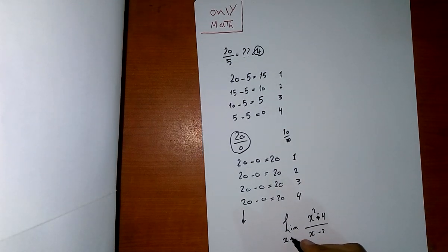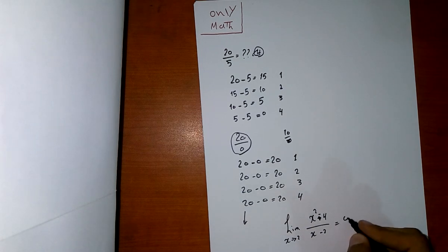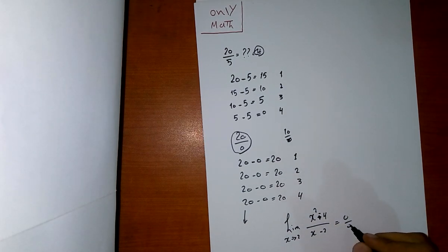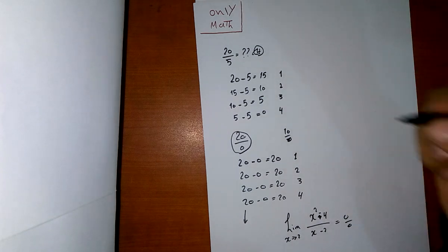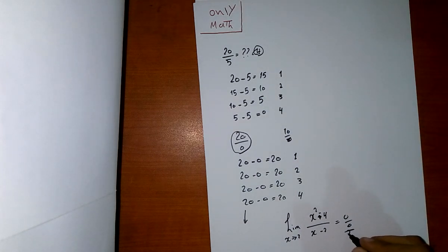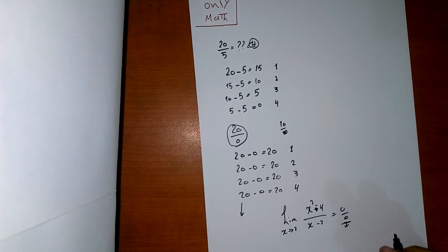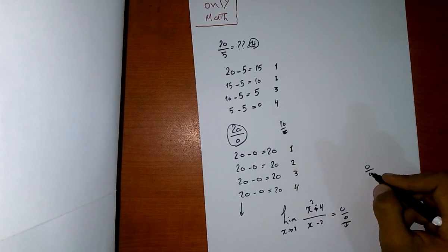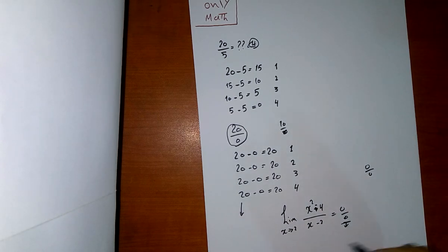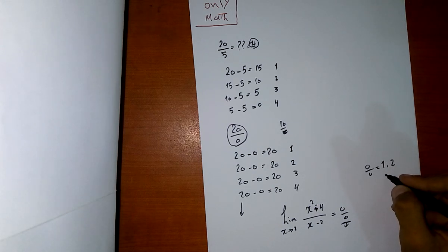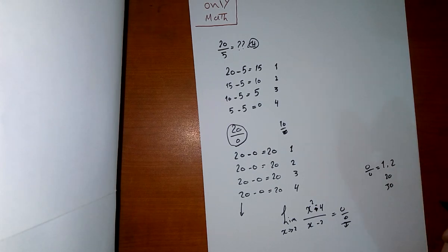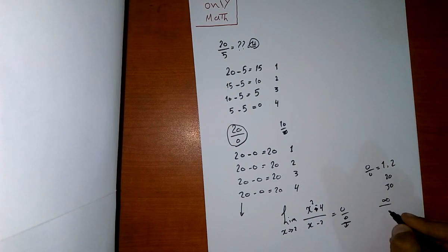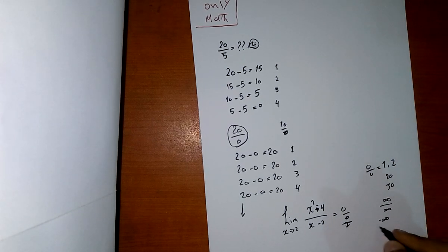limit has an accurate value or not. In the next video, you will know that 0 over 0 in a limit function may have values—maybe 1, 2, 20, 30, anything—or infinity over infinity, or negative infinity over negative infinity. All of these can have an accurate value in the next video. Don't forget to